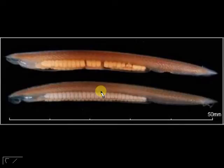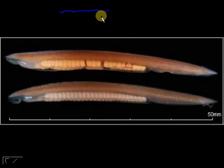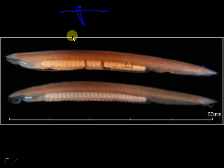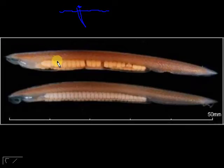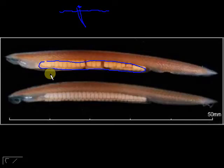The first one is Branchiostoma, which is your lancelet. In a normal setting, it is found in marine environments, usually buried in sand with only the mouth exposed. Looking at the external anatomy of Branchiostoma or amphioxus, the most obvious structures are the dark brown segments — those are the muscle segments, the myomeres. The light yellow portions are the gonads.